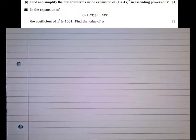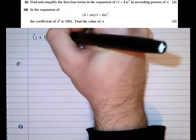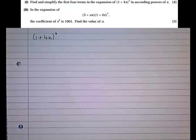This is a slightly more complicated example of a binomial expansion exam question. It's asking us to take 1 plus 4x to the power of 7 and expand it, giving the first four terms in ascending powers of x. That means starting with the lowest power of x.